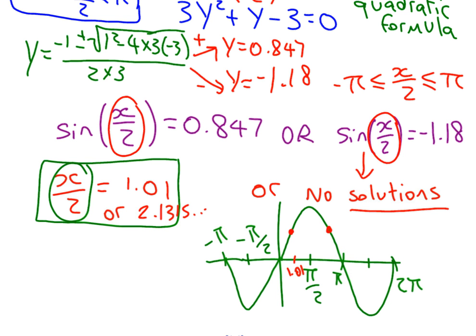Now, if you remember, we're trying to solve x. We currently have x over 2. So all you need to do now is times by 2. So x equals 2.02 or 4.26. And that's to three significant figures.